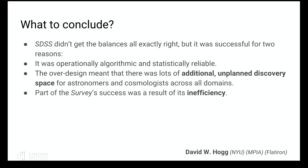What do I conclude from all this? SDSS did not get everything right — it was kind of a mess in various ways — but it was operationally algorithmic. The over-design meant there was tons of additional unplanned discovery space. The 10,000 papers from Sloan are not primarily about the growth of structure in the universe. We discovered families of asteroids, new classes of variable stars, we did kinematics of the Milky Way halo, we found ultra-faint galaxies being disrupted. It's the inefficiency — the over-design — that produced a lot of the survey's success.